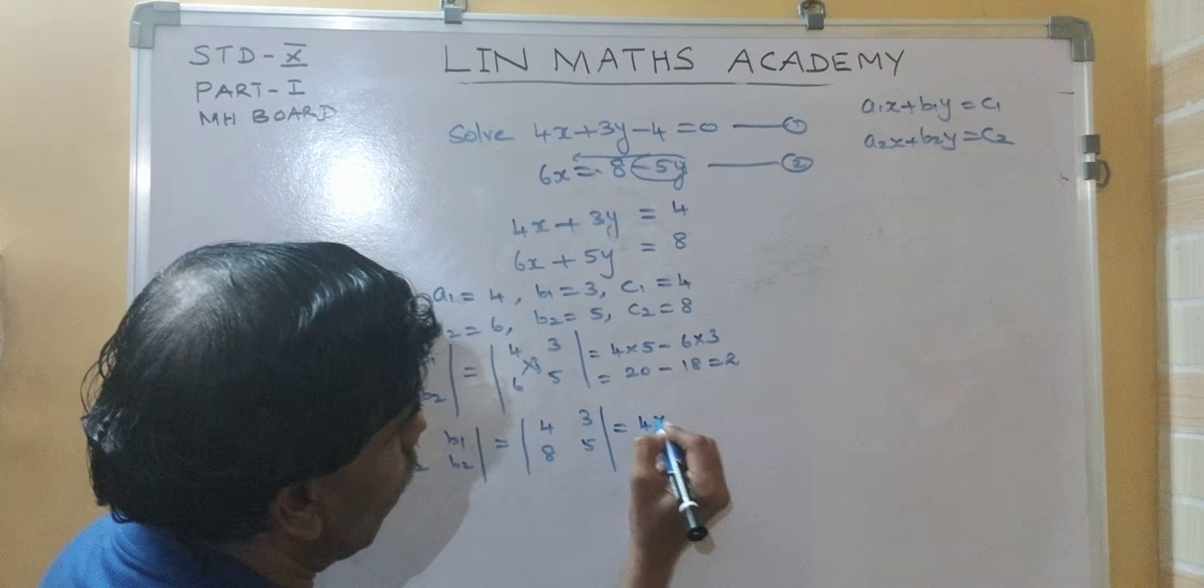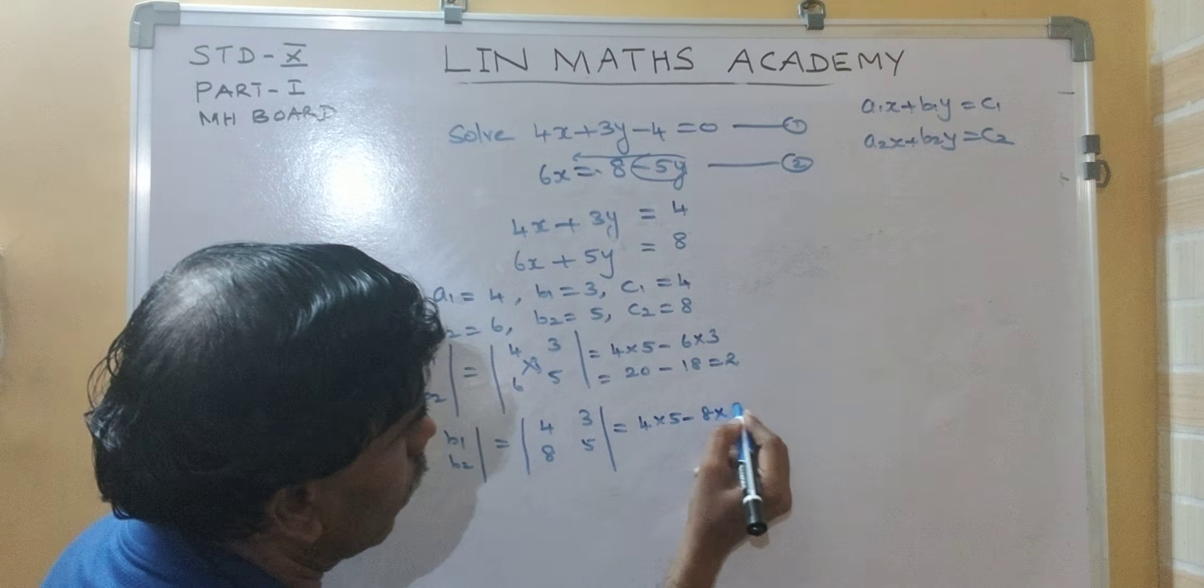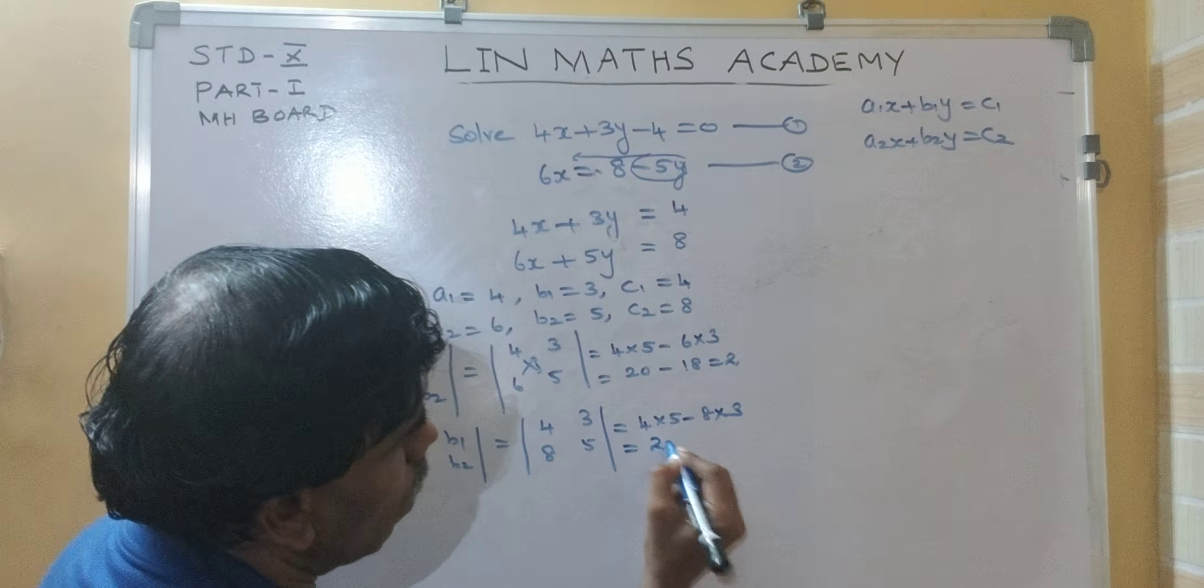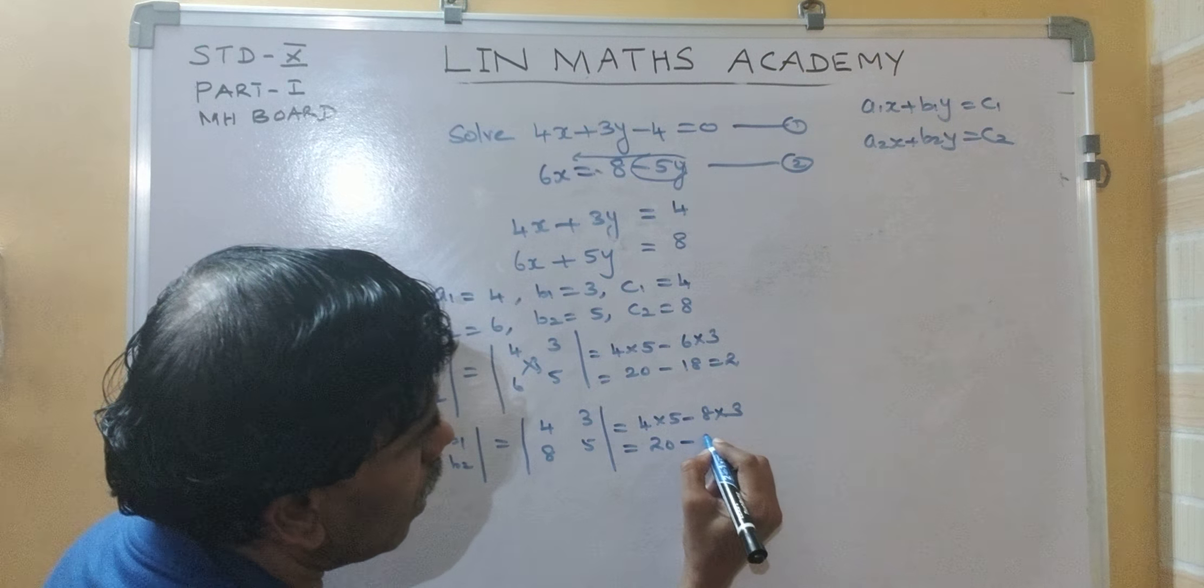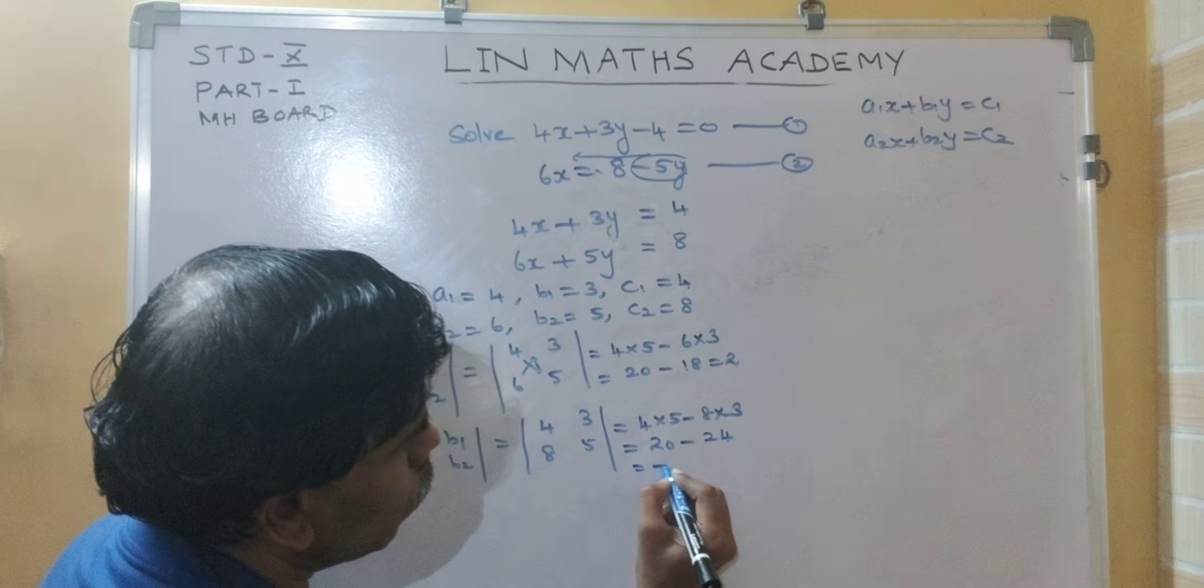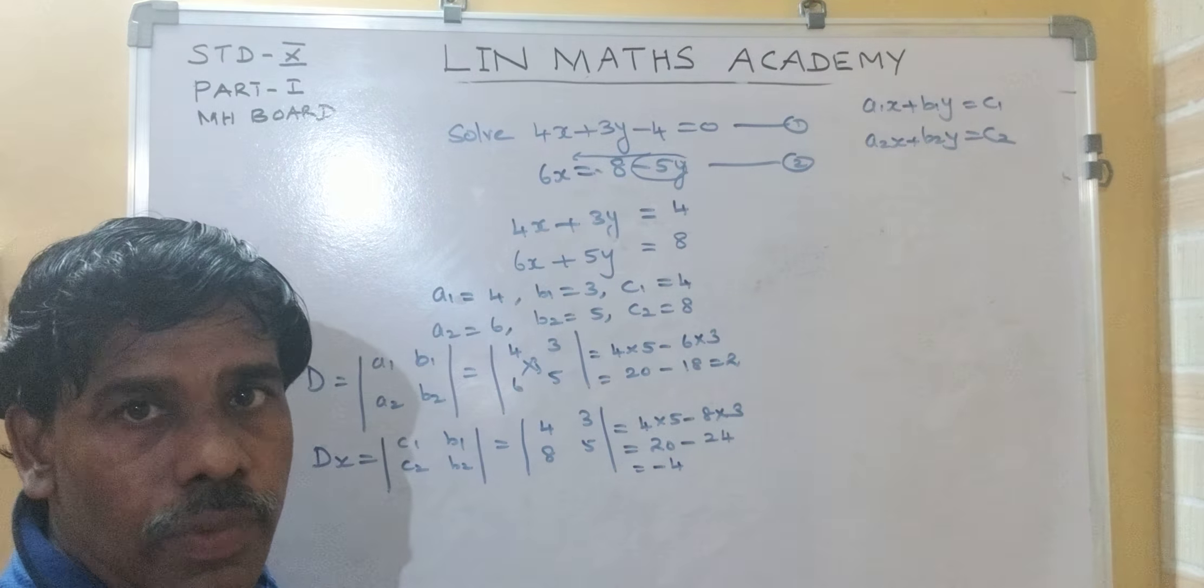So, 4, 5 cross multiply minus 8, 3 cross multiply. So, 20 minus 24. So, minus 4, right.